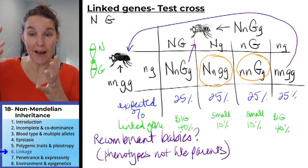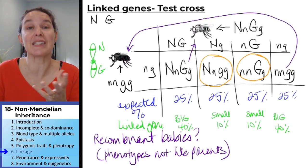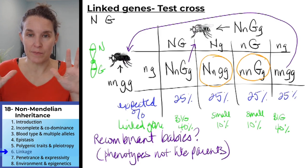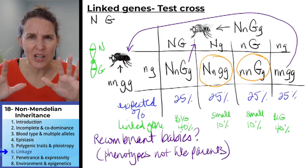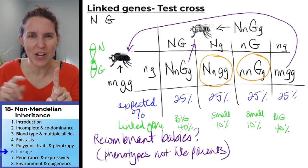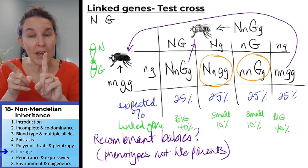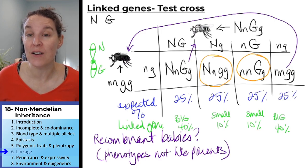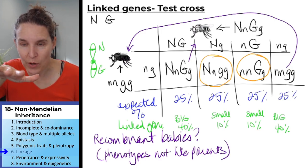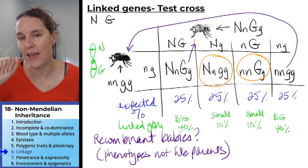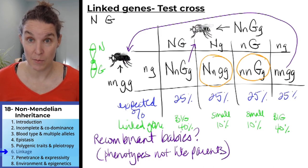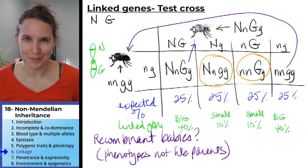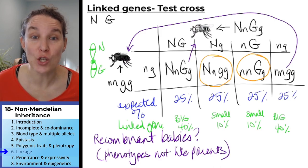That 10% recombinant result is your clue that the genes were linked on the same chromosome. You could have to evaluate data to determine if a trait is linked and how you know. You need two genes with complete dominance; then you can do crosses. If you end up with recombinant babies in smaller percentages, then those genes are linked.